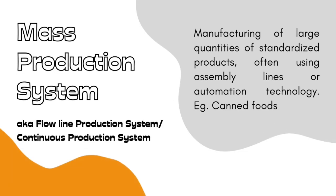So let us look into what all are the different types of production systems. Mainly there are four types of production systems. The first being the mass production system, which is also known as the flowline production system or continuous production system. In mass production, the system keeps on churning out output continuously.